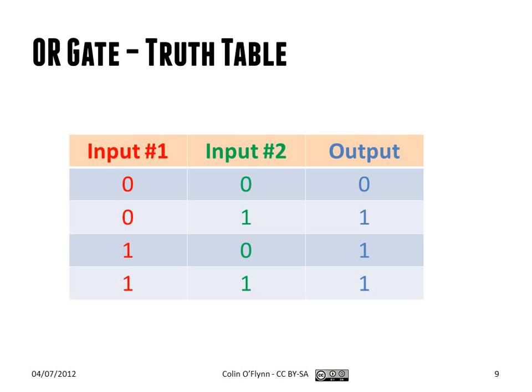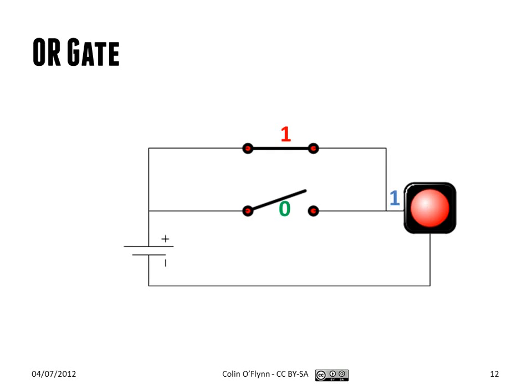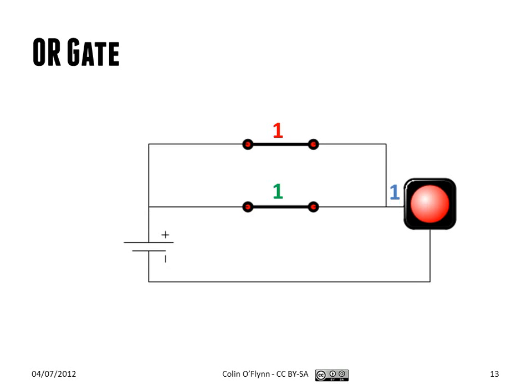What a gate does is defined by its truth table. This example is an OR gate. The output is one if each input is one, or if both of them are one — it's an OR statement. When both are zero, the output is zero. If you want to think about how it's built, consider it as two switches in parallel: if either switch is on, the output is on, and if both are on, the output is still on.